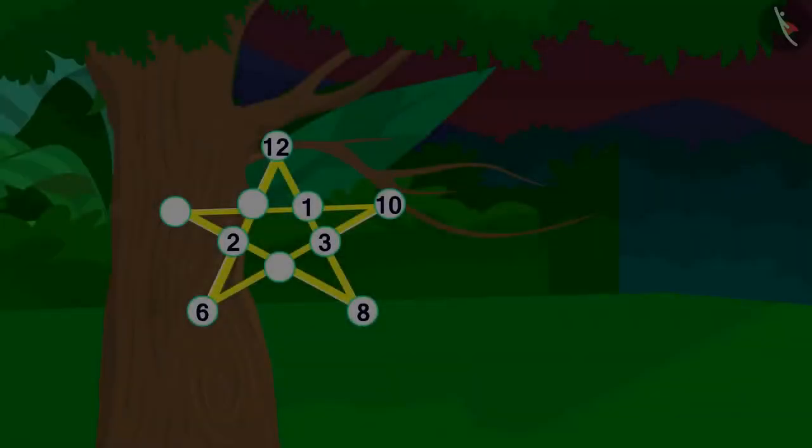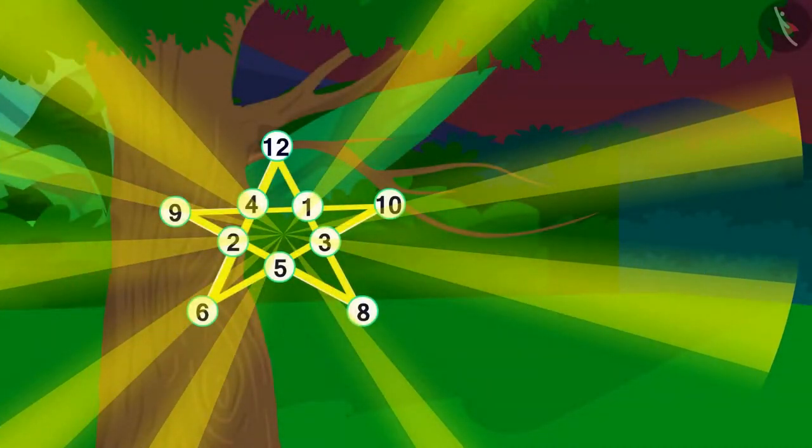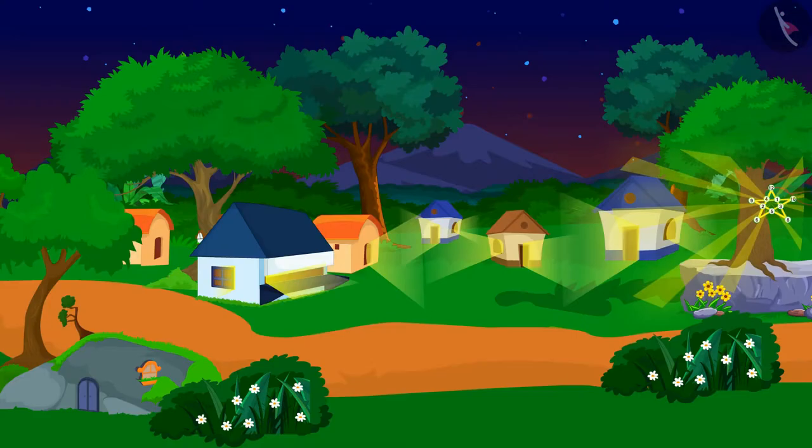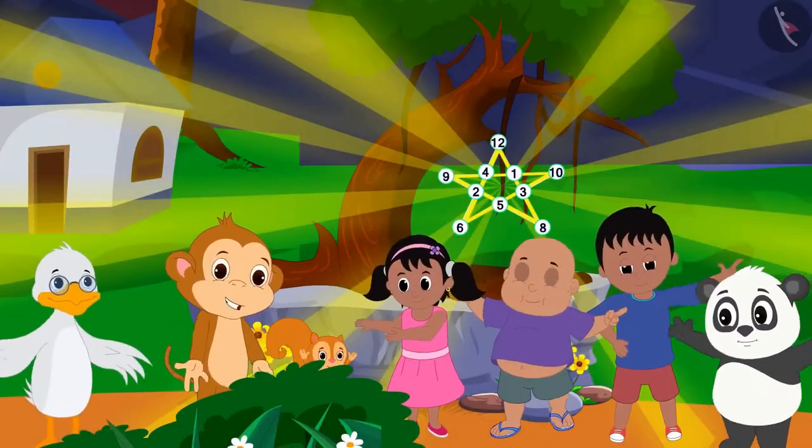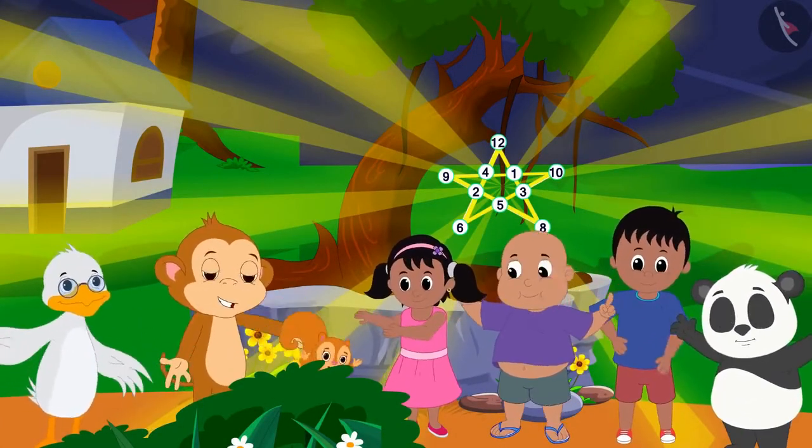As soon as the villagers filled the blanks of the star, light started coming out from the star and the electricity of the village resumed. All the villagers got excited and started dancing happily.